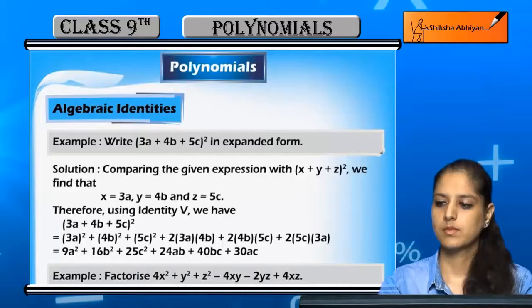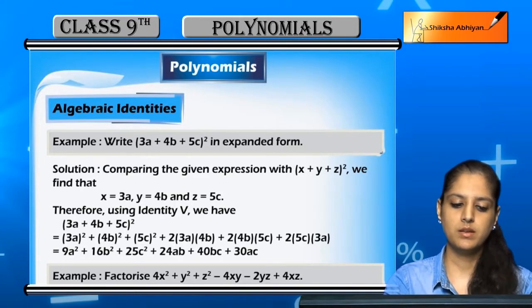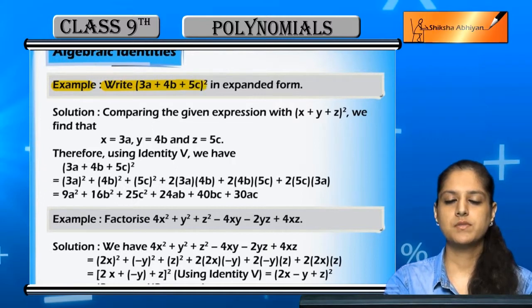This lesson covers algebraic identities with paper-based examples. First, write 3a plus 4b plus 5c whole square in expanded form.